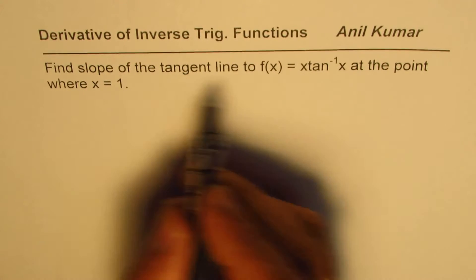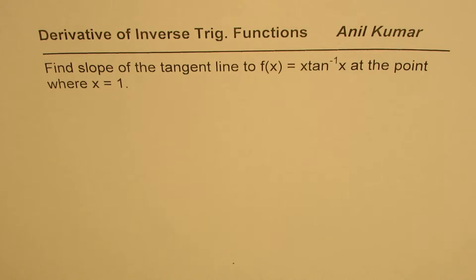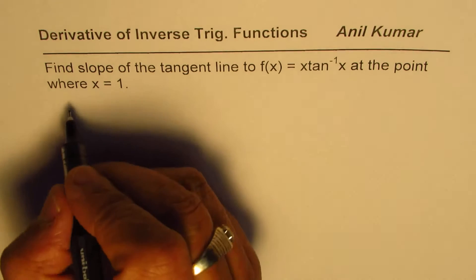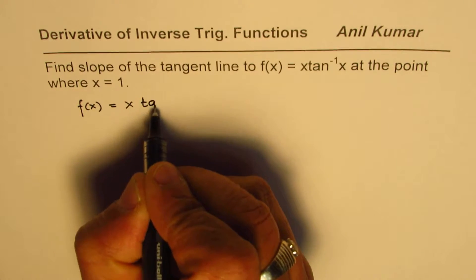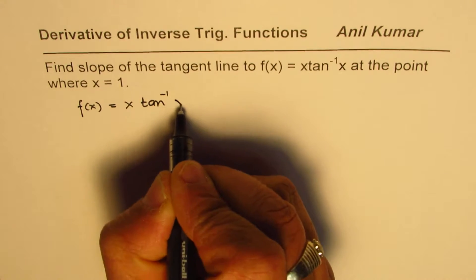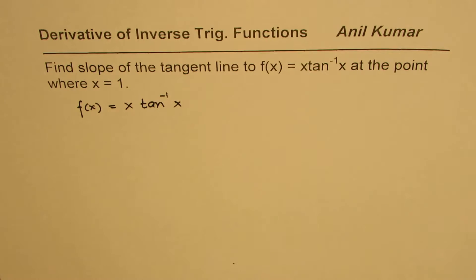You can actually extend and find the equation of tangent line also. What we're given here is a function f(x) = x times tan⁻¹x, so we need to apply the product rule.